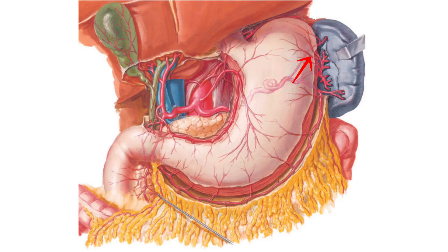The short gastric arteries ascend upward and supply the fundus and upper body of the stomach. While the left gastro-omental or gastroepiploic artery runs to the right along the greater curvature of the stomach in the greater omentum and terminates by anastomosing with the right gastro-omental or gastroepiploic artery.